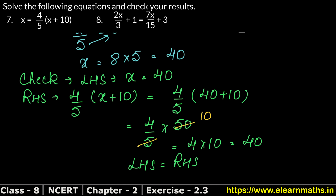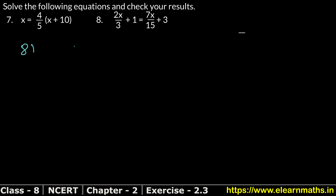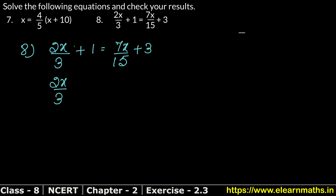Let's do question number 8. Question 8: 2x upon 3 plus 1 equals 7x upon 15 plus 3. Bring x values to one side: 2x upon 3 minus 7x upon 15 equals 3 minus 1.